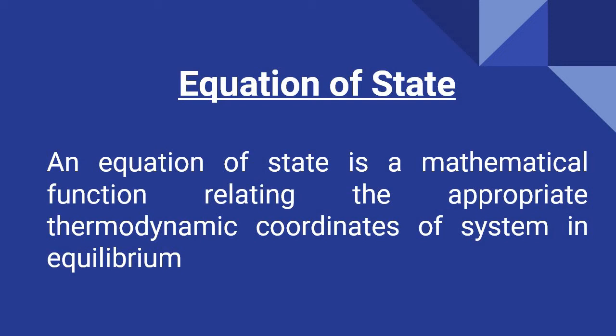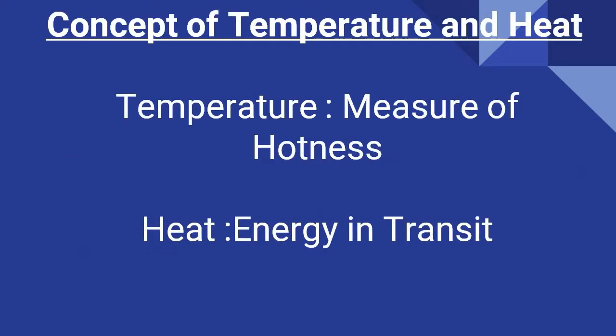Now we have to mention a term which is very familiar to us: equation of state. An equation of state is a mathematical function relating the appropriate thermodynamic coordinates of a system in equilibrium. At equilibrium, you can have the thermodynamic coordinates of the system that can be either intensive or extensive, and there will be a mathematical relation connecting that particular state of the system. You are already familiar with one equation of state, and that is the ideal gas equation PV = nRT, which can be considered as the equation of state of an ideal gas.